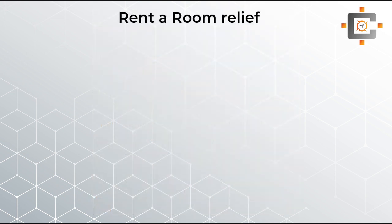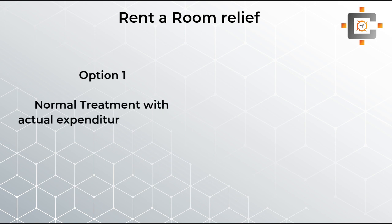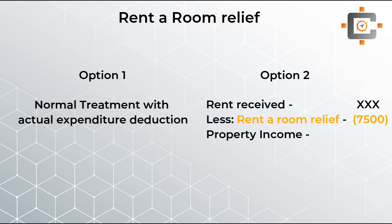Now let's come to the rent-a-room relief. There are two options. Option one is the normal treatment. Option two is to claim a fixed deduction of £7,500 without any deduction of actual expenditure. But if you opt for option two, then forget about your actual expenditure. This is an important concept for the fundamental level taxation and can be asked in MCQs, so please remember the amount and both options.